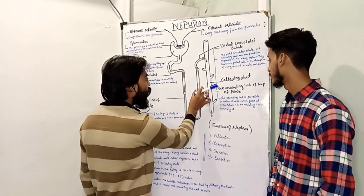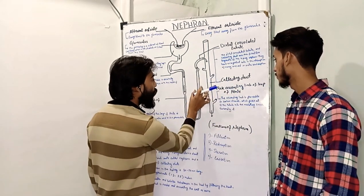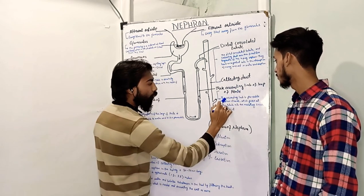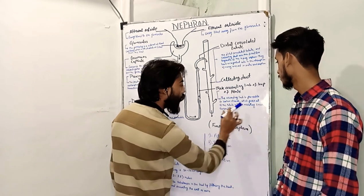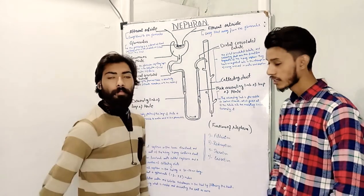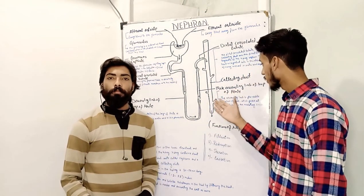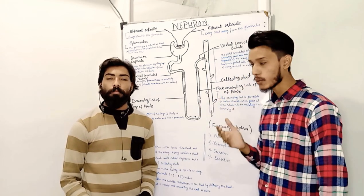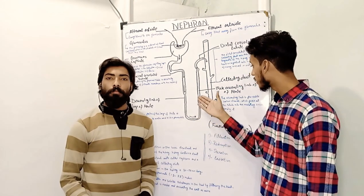This part of the nephron is the thick ascending limb of the loop of Henle. The ascending limb is permeable to sodium, which passes out from the tubules into the medullary tissue surrounding it. Sodium ions are given up and pass out from the tubules in this segment.